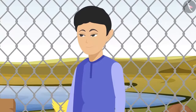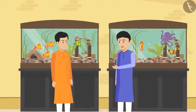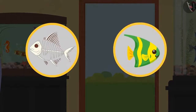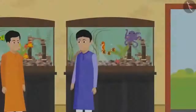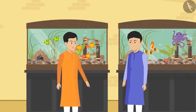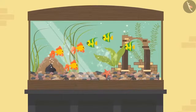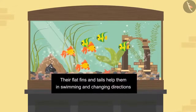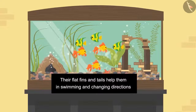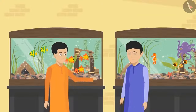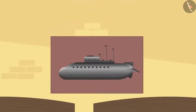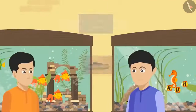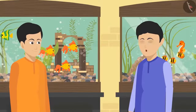They visited the aquarium and discussed fish. The rib cage is the basic structure of a fish's body, and instead of limbs they have small fins. This streamlined body shape allows water to flow around it easily, helping fish move through water. Their flat fins and tails help with swimming and changing direction. The boys compared this to submarines, which are also wide in the middle and narrow at the front and back — just like fish.